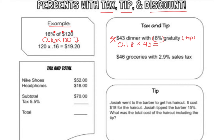This gives us $7.74 as the tip. Now to find the total cost of the dinner including tip, we have a $43 dinner plus a $7.74 tip, so we add those together to get $50.74 total for dinner including tip.